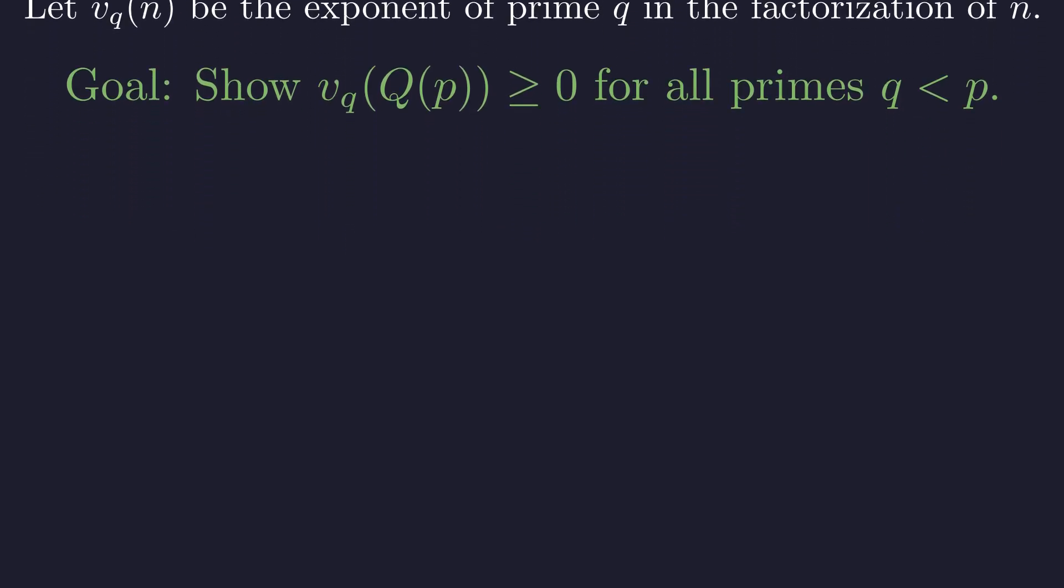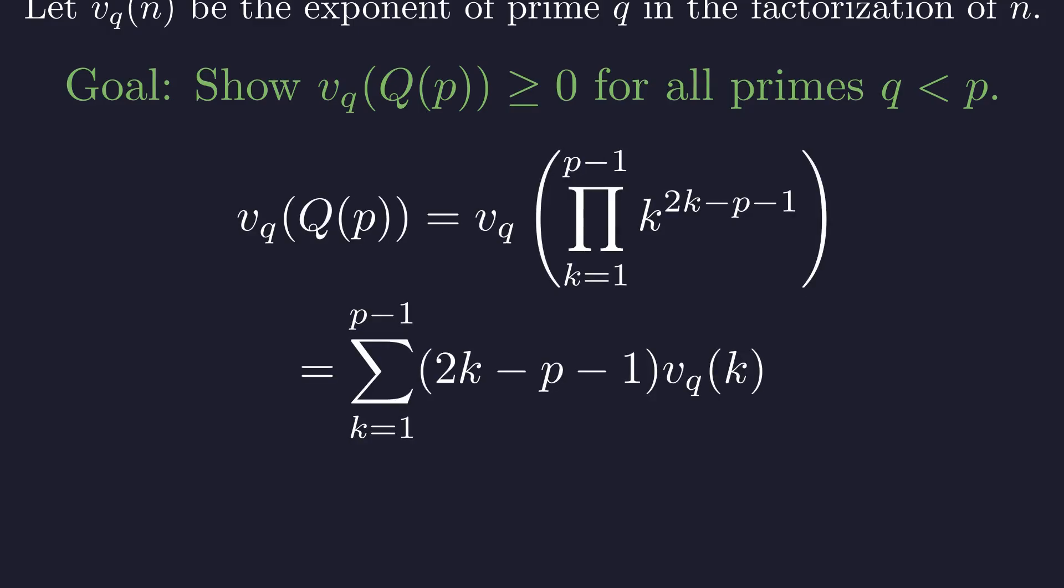Here's where valuations really shine: when you have a product of powers, the valuation of the whole thing is just the weighted sum of the valuations of the pieces. Think of it like this: if I raise k to some power, I'm multiplying the q content of k by that power. So the total q content of our product is this weighted sum you see here.